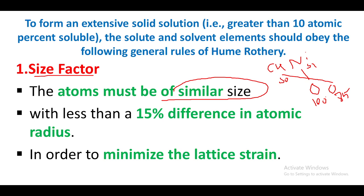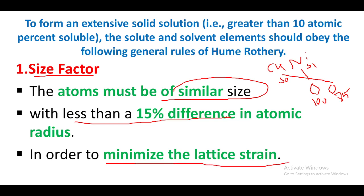The atomic radius difference should be within 15 percent. For example, if one atom is 100 mm and the other is 85 mm, that is within the acceptable range for mixing. If the size difference is within 15 percent, it minimizes lattice strain. If the size difference exceeds this range, the strain rate increases.